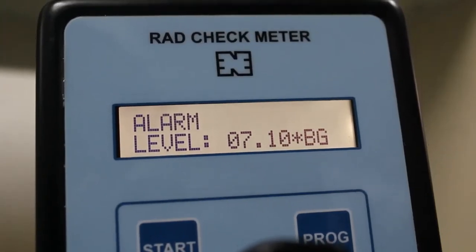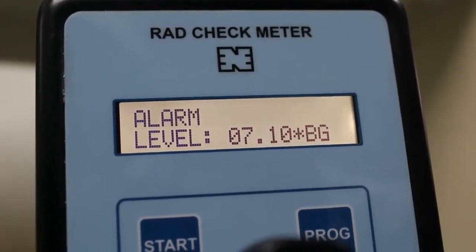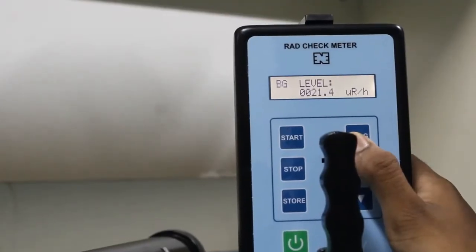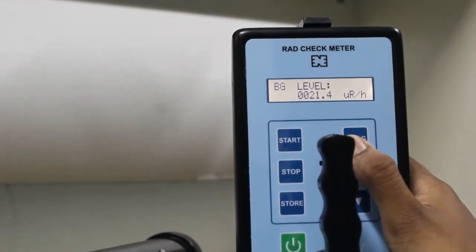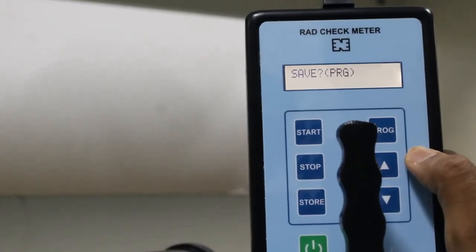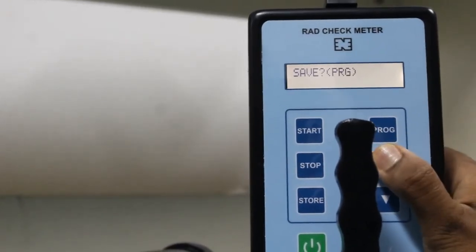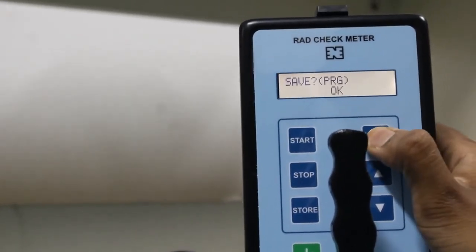Alarm level is used to keep the set point to turn on alarm above the set point. BG level is used to display the natural background when the unit is powered on. Save PROG is used to save the changes that you made upon your requirement.